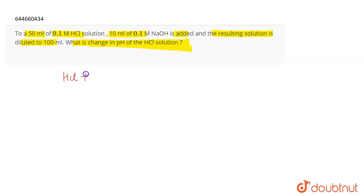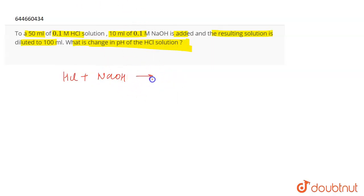The reaction that takes place is HCl reacting with NaOH. As this is a reaction between a strong acid and a strong base, it leads to the formation of NaCl as well as water.